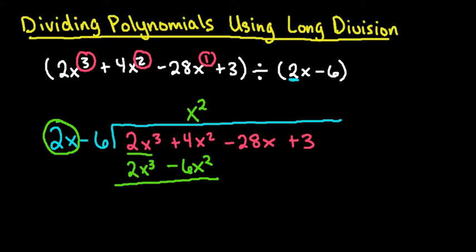So if you remember from elementary school, after you multiplied, you always subtract. So what we're going to do here is we're going to subtract. Basically what happens is we change the signs of both. We always want this first term to cancel out so that it's no longer there. The second term, because I have 4x squared plus 6x squared, I end up with 10x squared. And then we just drop down the next term like we normally would in a division problem from elementary school.